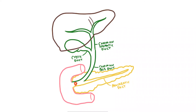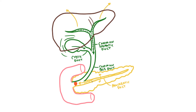Finally, what about an obstruction at the ampulla? This still blocks the liver and the gallbladder, so it'll have the same symptoms as before, but now it's also blocking the pancreas. If those digestive juices are unable to leave the pancreas, they can start digesting the organ itself, resulting in inflammation and pain.